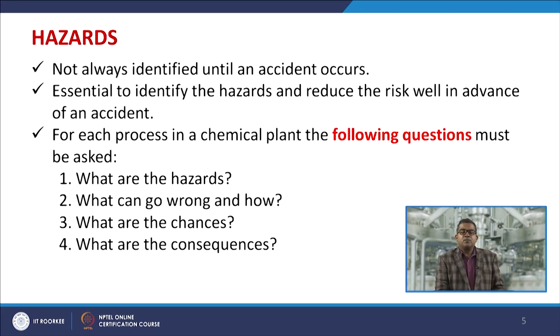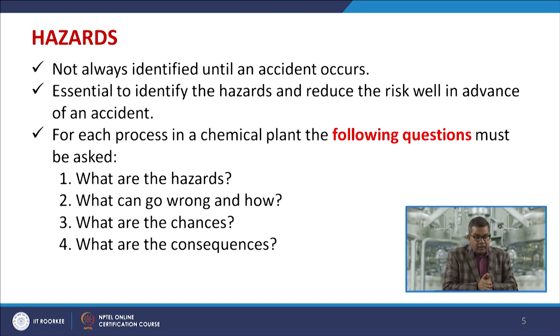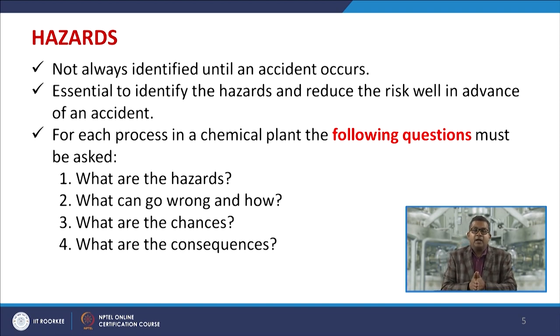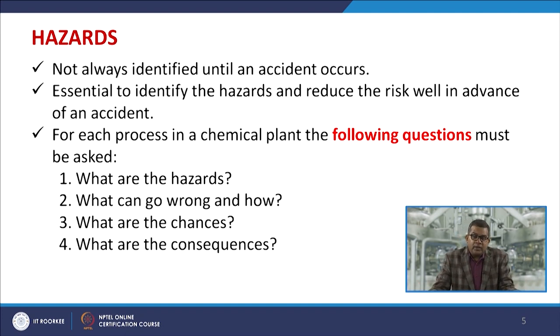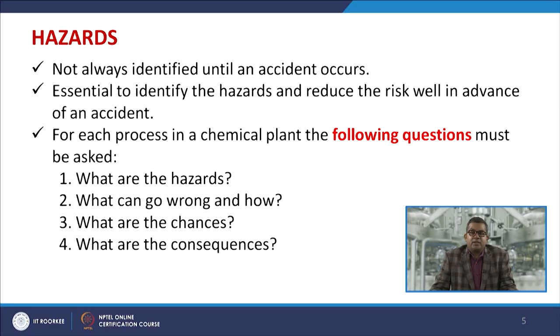Now that we are familiar with these definitions, let us look at hazards more closely. Hazards are not always identified until an accident occurs — for example, you would not identify a roof collapse hazard until it actually collapses. Therefore, it is essential to identify hazards and reduce risk well in advance of an accident. This is the primary requirement, so that you can minimize losses, minimize production loss, and minimize economic impact.